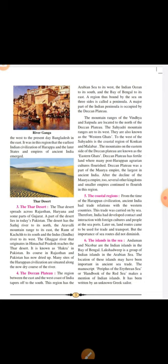Fifth are the coastal regions. From the time of the Harappan Civilization, ancient India had trade relations with western countries. This trade was carried on by sea, so India developed contact and interaction with foreign cultures and people at the seaports. Andaman and Nicobar are the Indian islands in the Bay of Bengal, and Lakshadweep is a group of Indian islands in the Arabian Sea. The manuscript Periplus of the Erythraean Sea, or Handbook of the Red Sea, makes mention of the Indian islands and was written by an unknown Greek sailor.